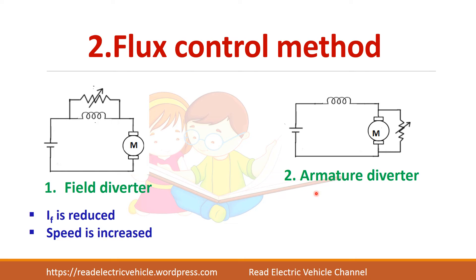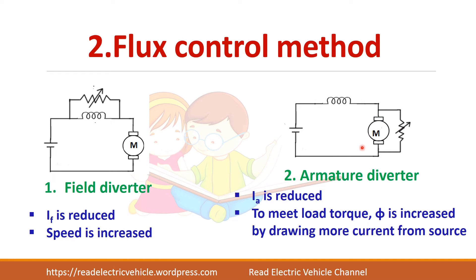The next method is the armature diverter. Here a resistance is connected in parallel with the armature, so the armature current gets reduced. But in constant torque applications, to meet the load demand from the source, more current is drawn, so the field current will increase. As the field current increases, speed is decreased.